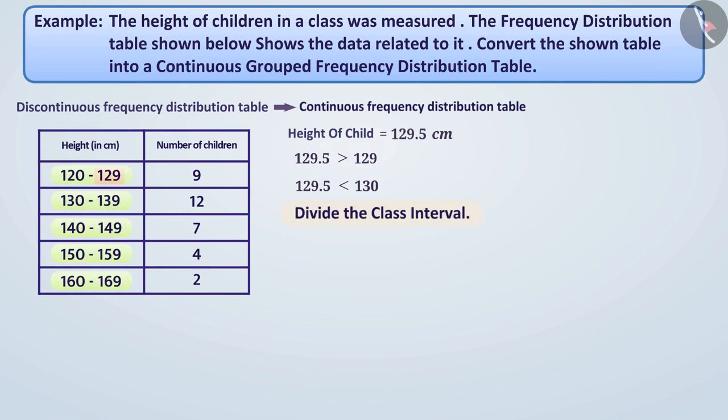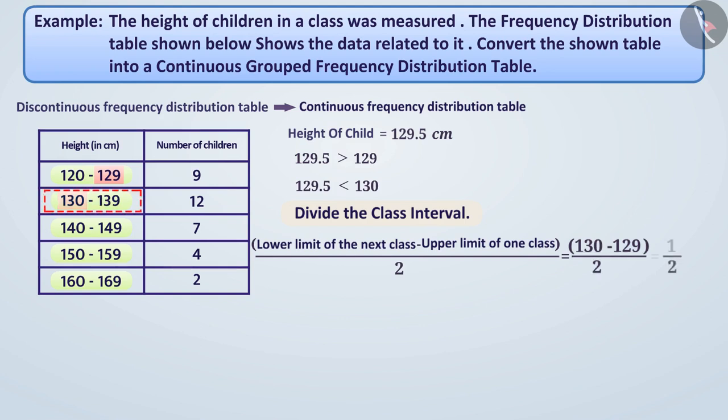This will make the upper and lower limits of consecutive intervals equal. For this, we will subtract the upper limit of one class from the lower limit of the next class in consecutive order and divide the result by 2. For example, we will subtract the upper class limit 129 from the class 120 to 129 from the lower class limit 130 of the next class 130 to 139 and divide the result by 2. This gives us 0.5.